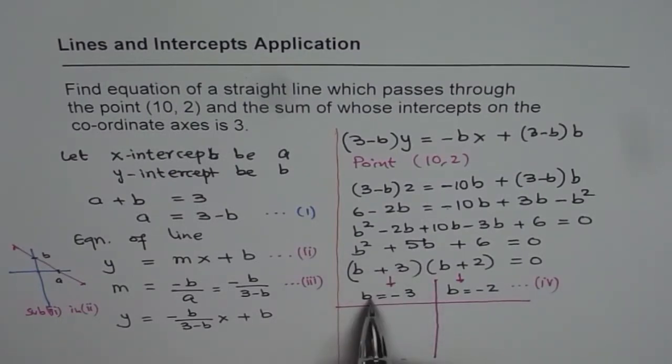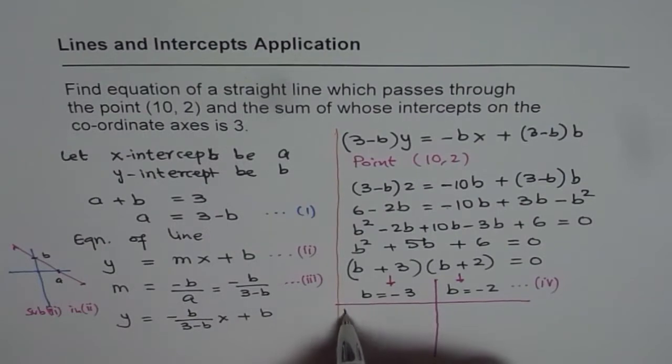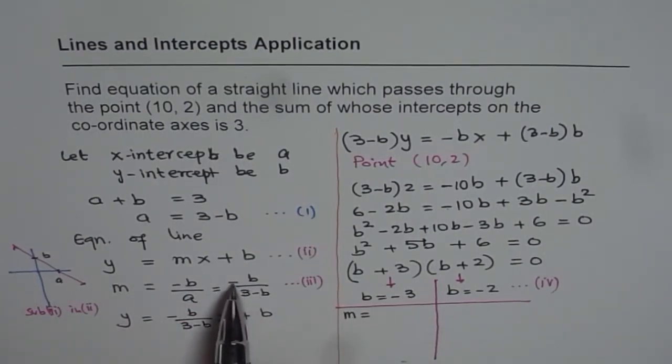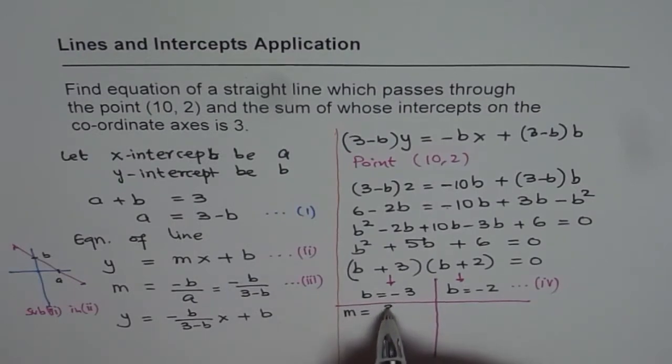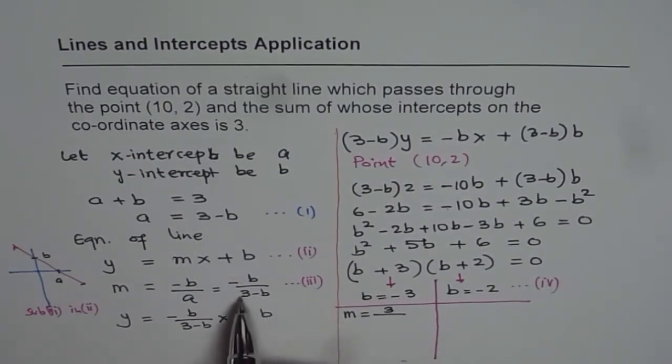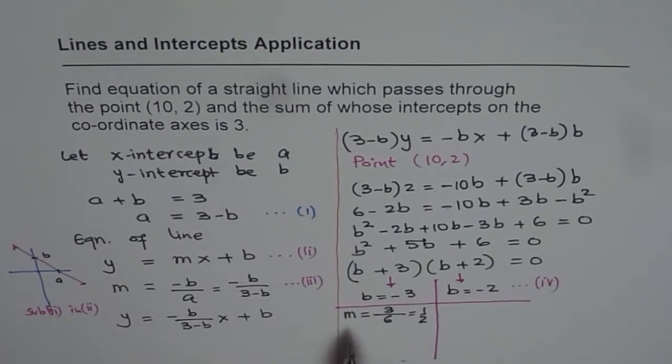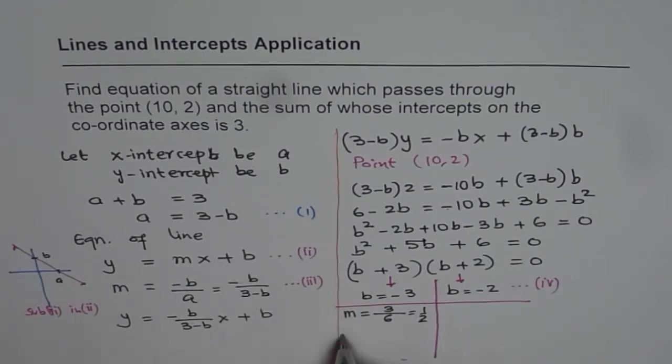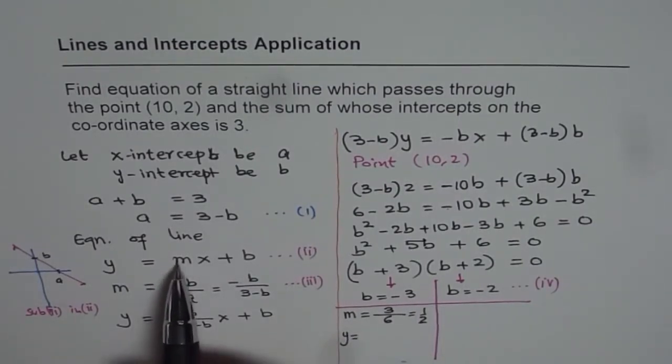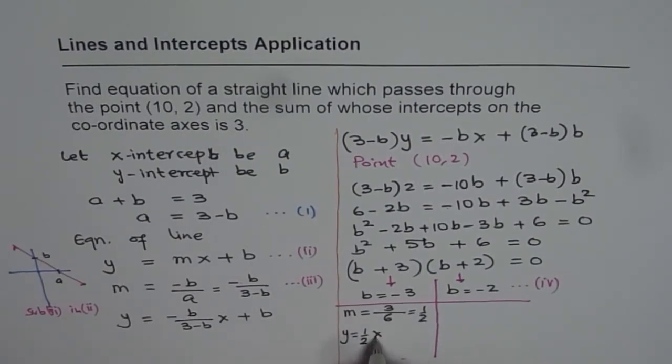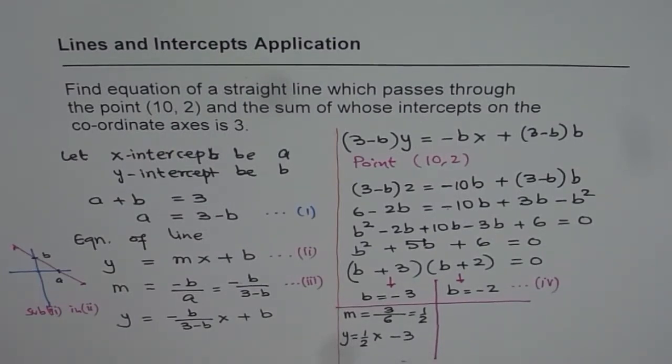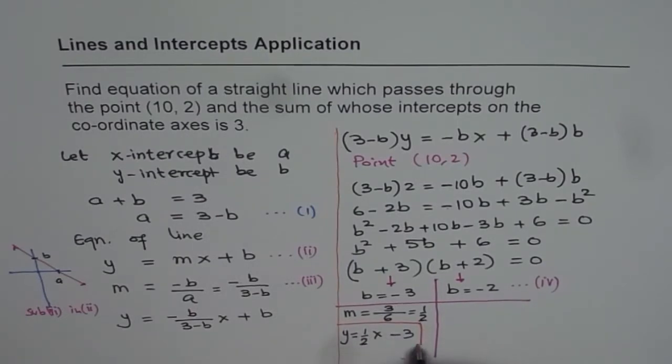For the first one, if I put B as -3, what is my slope? In that case, slope is equal to minus and minus becomes plus. We get 3 over (3 - (-3)), which is 3 over 6, which is equal to 1/2. So slope is half in this case. If the slope is half and B is -3, then what is the equation? Equation will be y = (1/2)x - 3. So that is my first equation. This is one of my solutions.